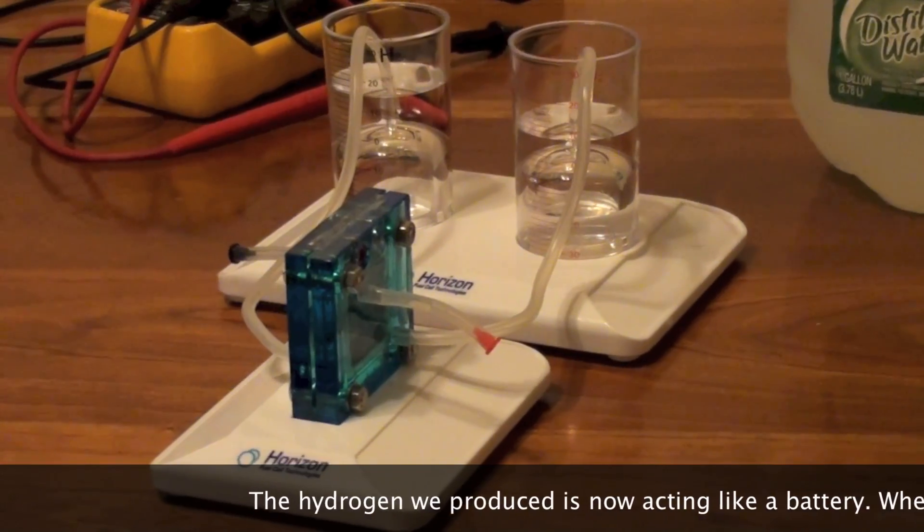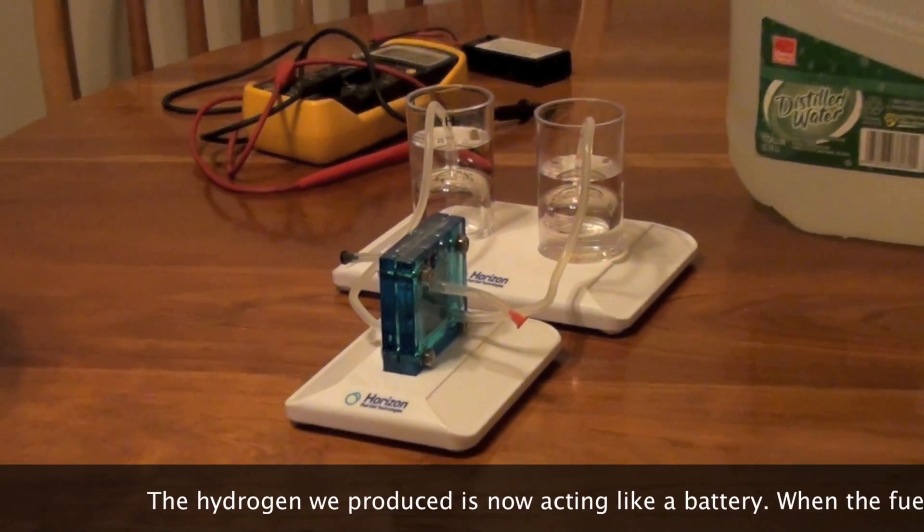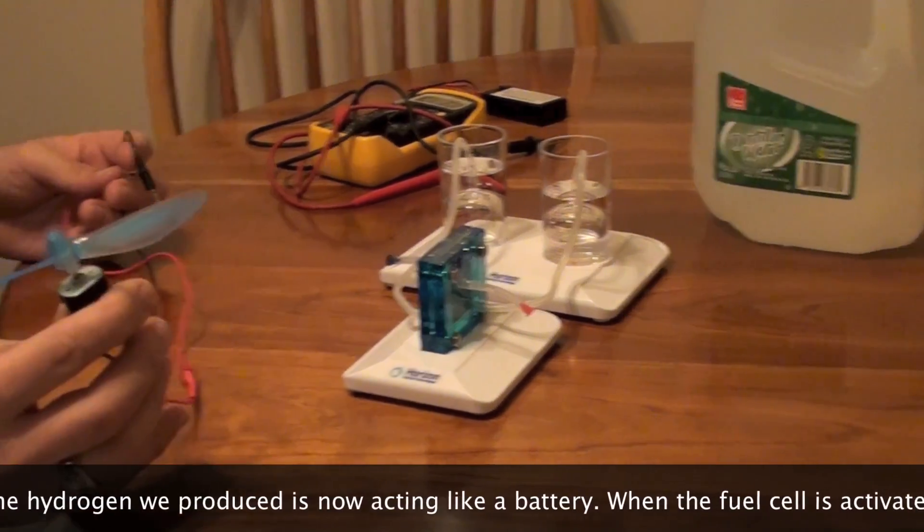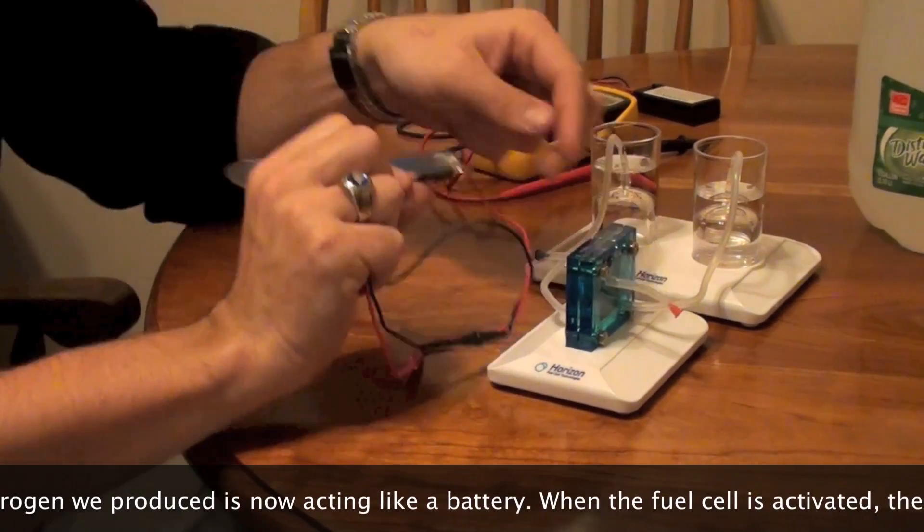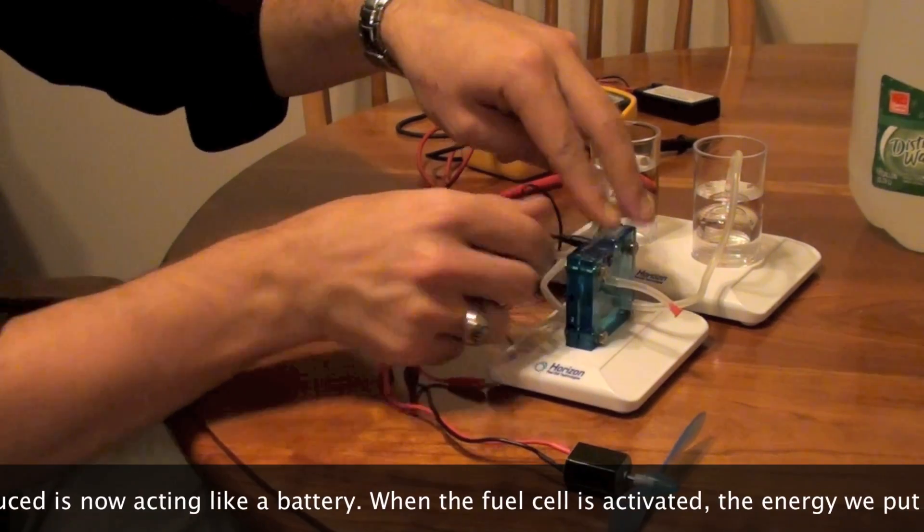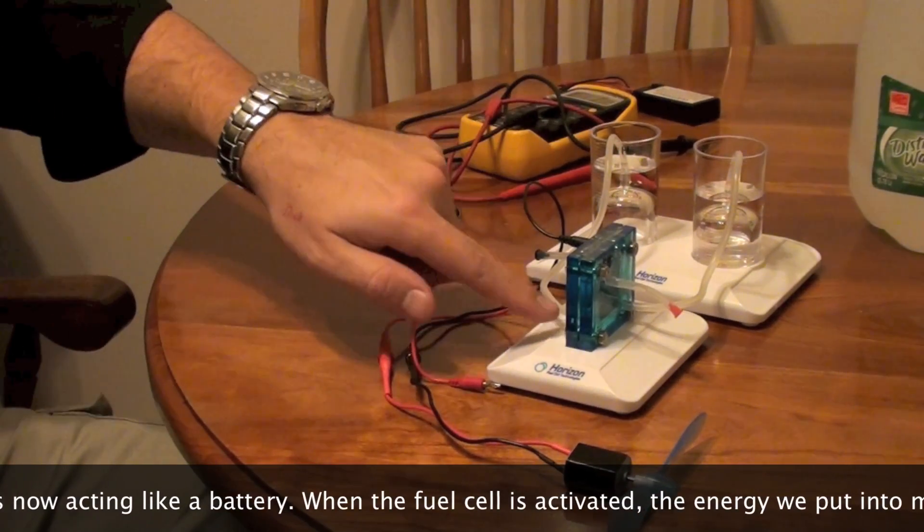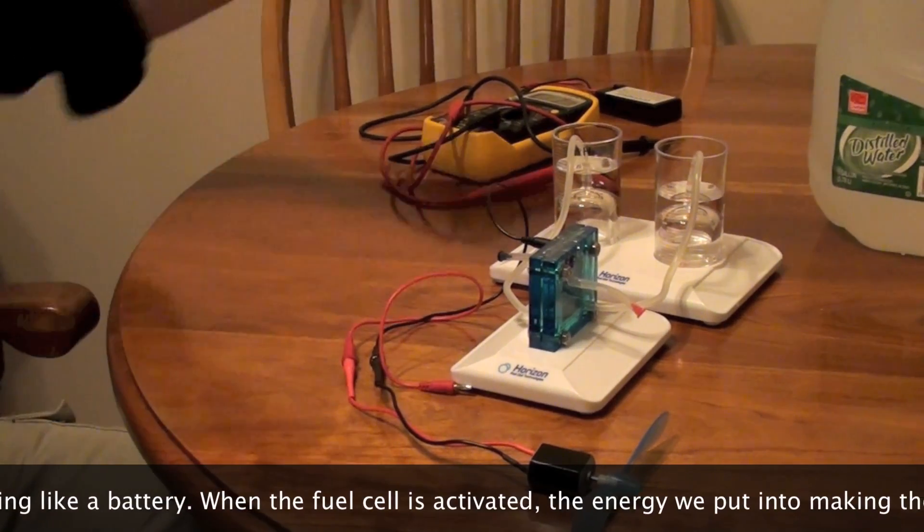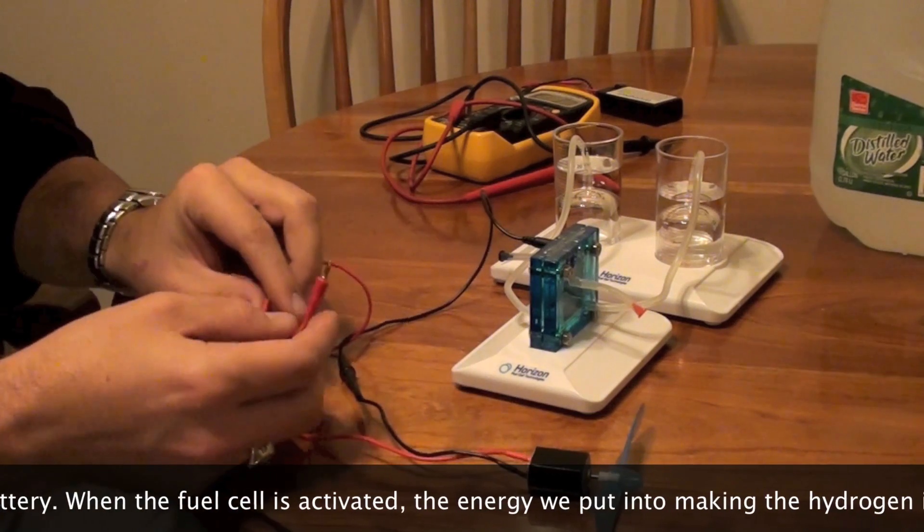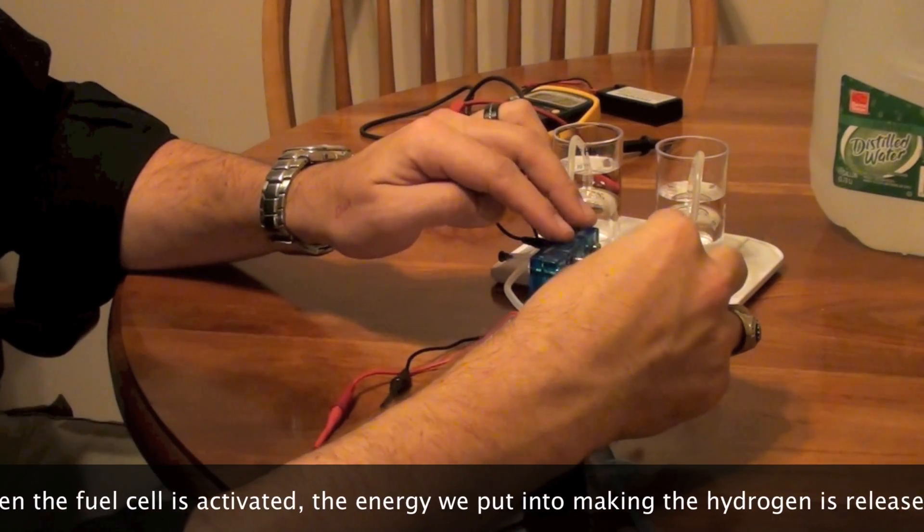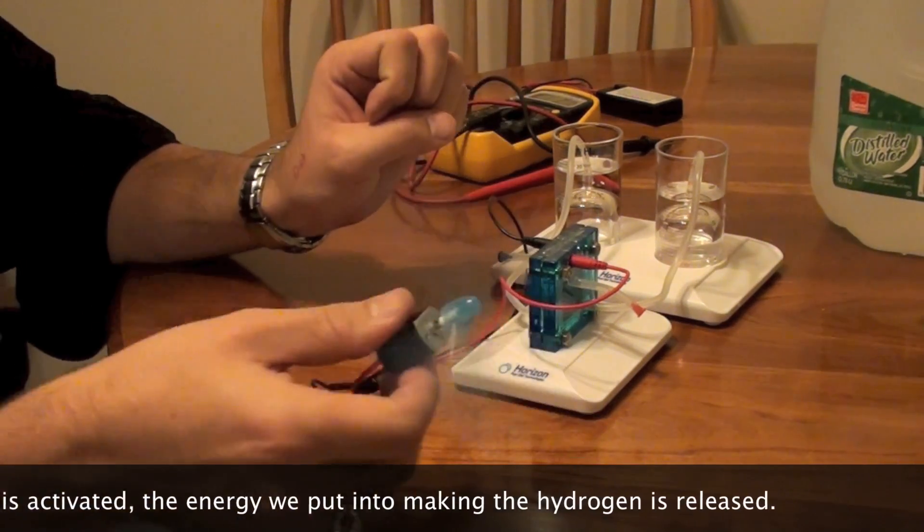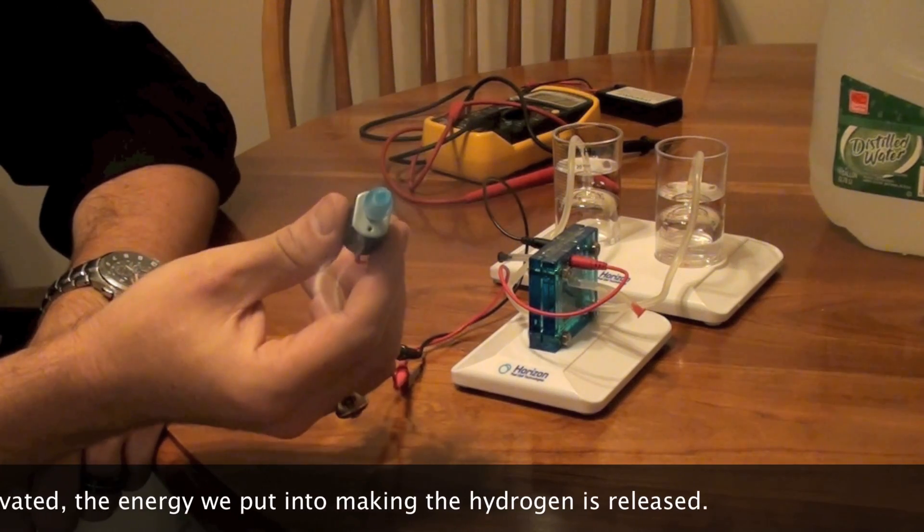Now to show how hydrogen fuel cell works and that it actually makes power I'm going to attach a little motor. This is a motor that's just a little fan. Now what will be happening is the hydrogen will be coming into the fuel cell on one side and the oxygen will be coming into the fuel cell on the other side and they're going to meet in the middle at the PEM and the bypass circuit will create electricity.